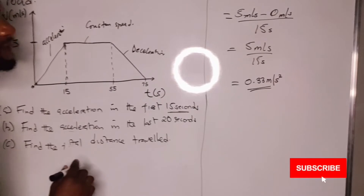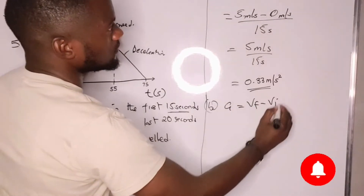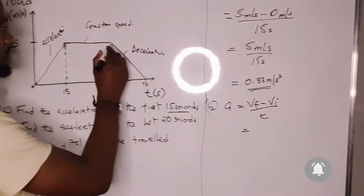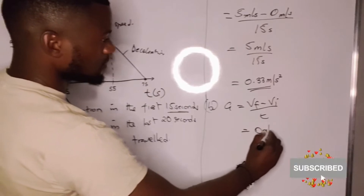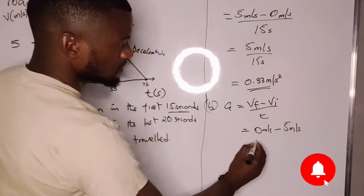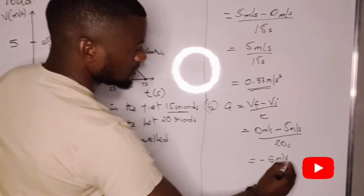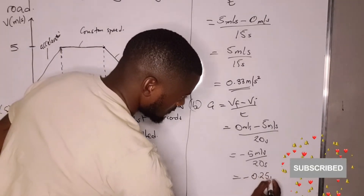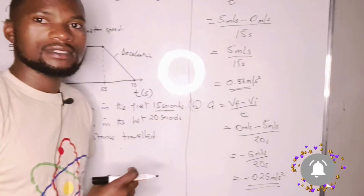For part B, we calculate the acceleration in the last 20 seconds. Acceleration equals final velocity minus initial velocity, divided by time. The final velocity is 0 because the object is coming to rest, the initial velocity is 5 meters per second, and the time is 20 seconds. So acceleration = negative 5 divided by 20, giving us negative 0.25 meters per second squared.